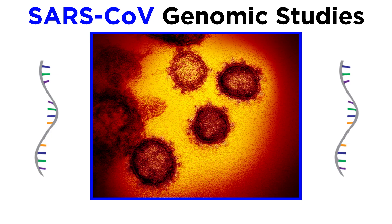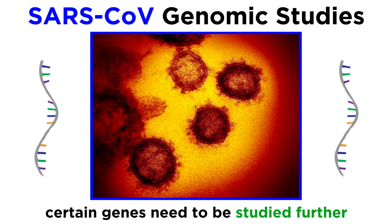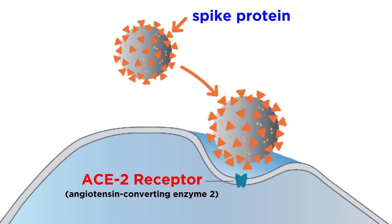Even though the SARS coronavirus is in the same family as coronaviruses we had already known about, scientists compared their genomes and found SARS coronavirus to be only moderately related to other known coronaviruses. This means that we understand what at least some of the genes in this virus are doing, but there are portions that need to be studied further. The outer spikes on SARS coronavirus attach to receptors on host cells called ACE2, or angiotensin-converting enzyme 2. After binding on the surface, both the ACE2 receptor and the virion are internalized into the host cell, where it makes many copies of the virus to then attack more cells.